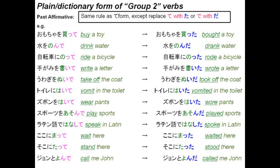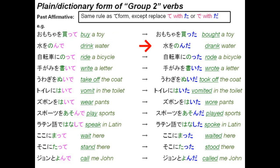Let's compare a few verbs in their te form versus their plain past affirmative. For example: omocha wo katte — buy a toy; omocha wo katta — bought a toy. Mizu wo nonde — drink water; mizu wo nonda — drank water. Jitensha ni notte — ride a bicycle; jitensha ni notta — rode a bicycle. And so on.